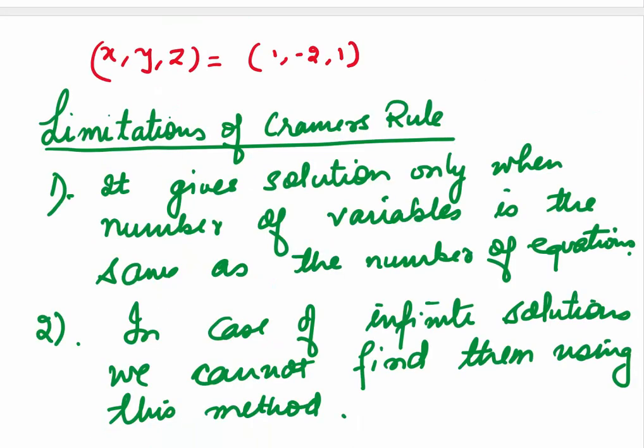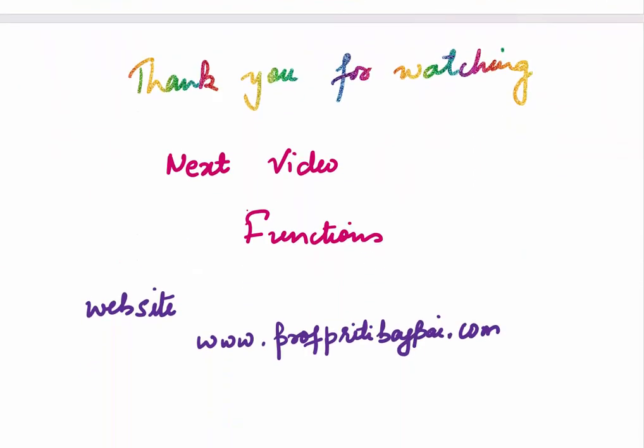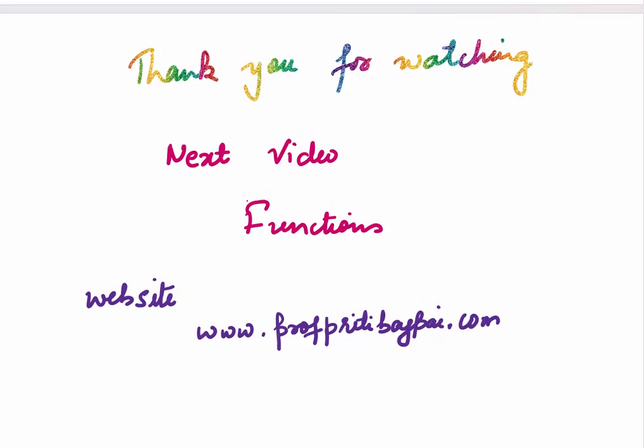Cramer's Rule has certain limitations. It gives a solution only when the number of variables is the same as the number of equations. And if there are infinite solutions, we cannot find them using this method. Thank you for watching. Our next video will be on functions. For detailed notes and practice problems, you can visit my website profpritivajpayee.com.